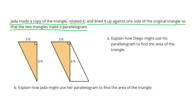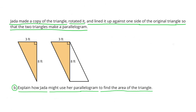Jada made a copy of the triangle, rotated it, and lined it up against one side of the original triangle so that the two triangles make a parallelogram. Explain how Jada might use her parallelogram to find the area of the triangle.